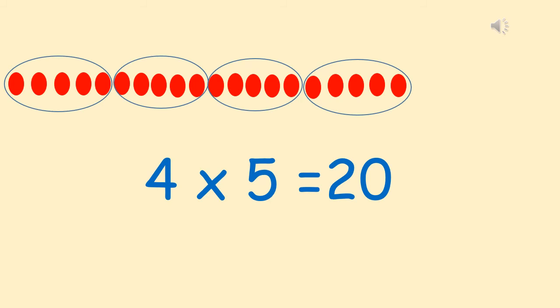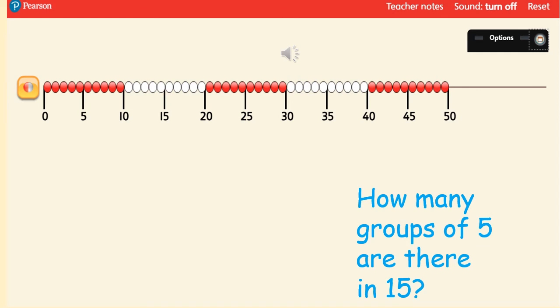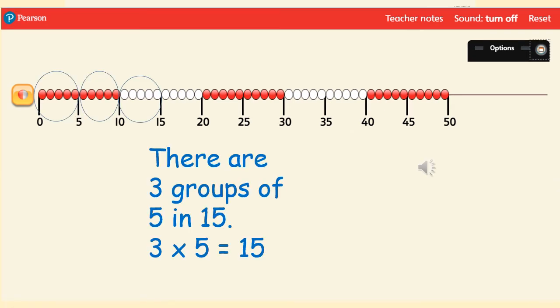So we've got 1, 2, 3, 4 groups of 5. Again, 4 times 5 equals 20. Here's my bead string tool. I want to find out how many groups of 5 are in 15. Can you help me to work it out? 1, 2, 3. There are 3 groups of 5 in 15. 3 times 5 equals 15.